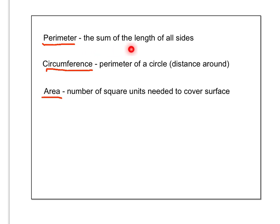So we have perimeter which is the sum of the length of all sides. So if you're trying to find the perimeter of a square for example, you have to add all four sides together.